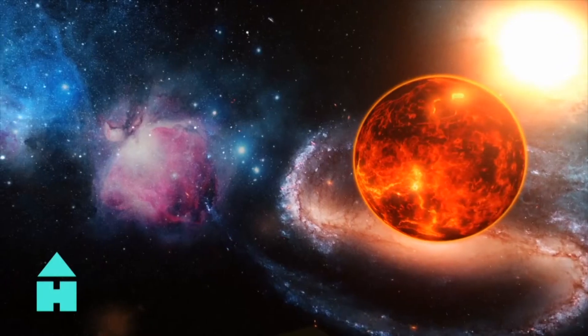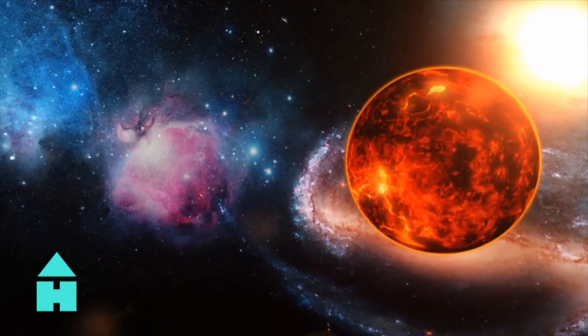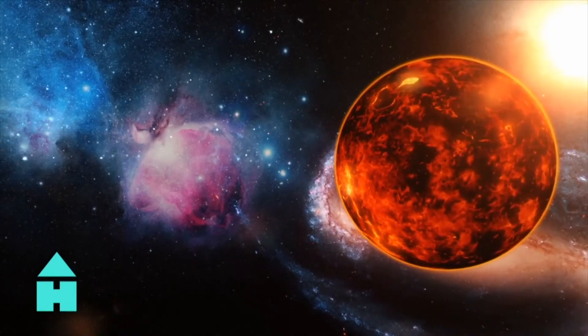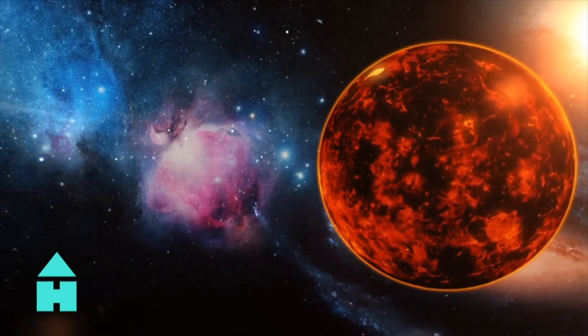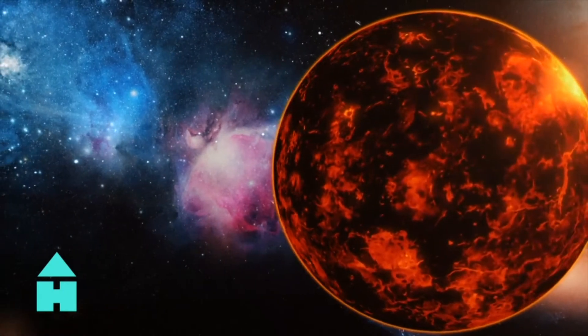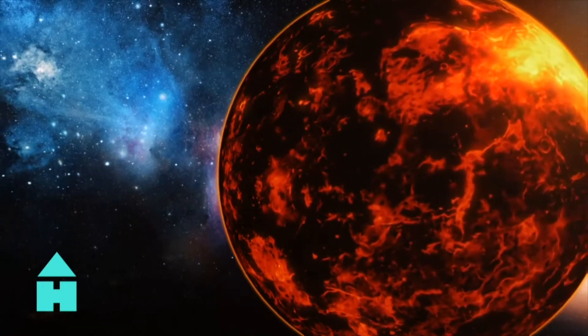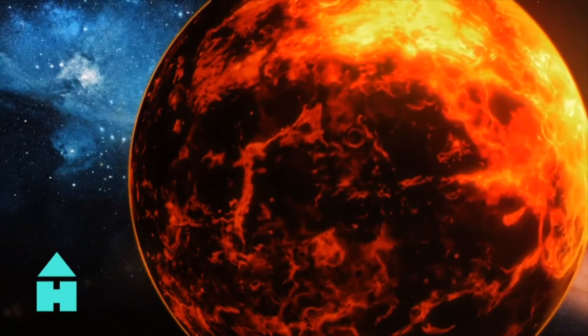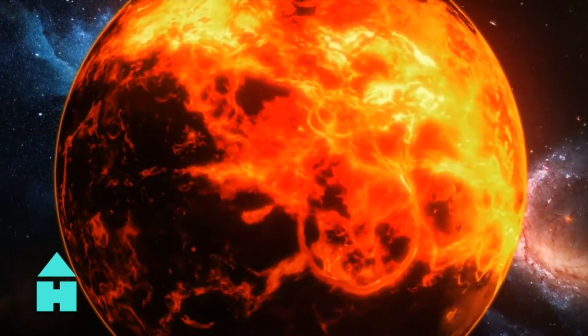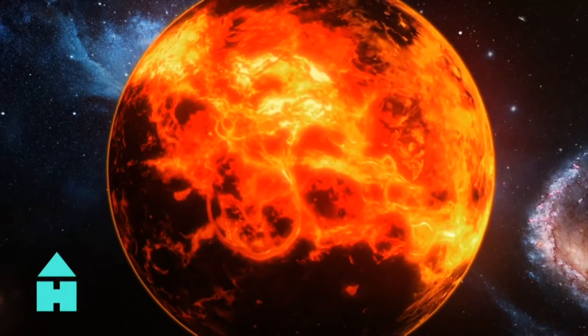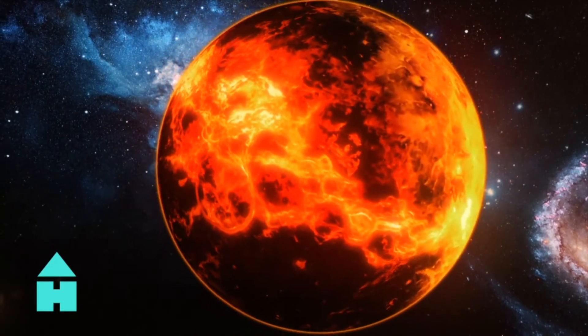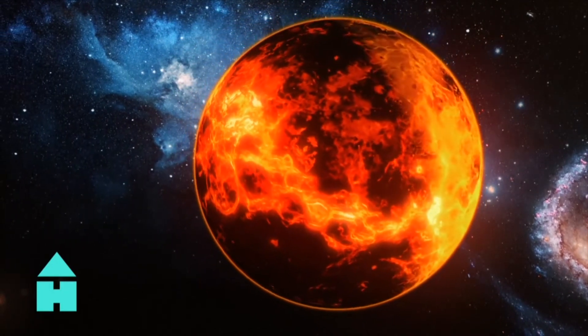Strangely enough, although Mercury is closest to the sun, Venus is the hottest planet in the solar system. And it's actually our closest neighbour. Venus is easily seen in the night sky. It's the brightest object in the sky, apart from the sun and the moon.